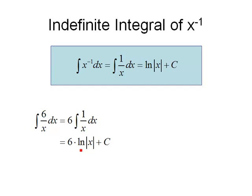If we were to check this, we would notice that the derivative of ln of x is 1 over x, 6 times 1 over x is 6 over x, so that would verify that we've done this correctly.